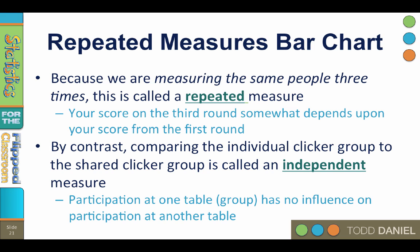When we are comparing the individual clicker group to the shared clicker group, that is an independent measure. Being a male in one group has no influence on the gender of someone at another table. In the same way, measures of participation between groups are independent. Level of participation at one table or within one group has no influence on participation at another table.